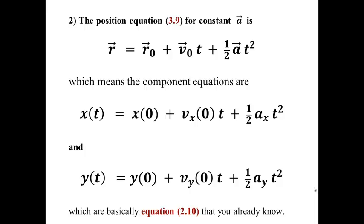Position is initial position plus initial velocity times time plus 1 half the acceleration times time squared. As a vector equation, that's actually two equations, one for the x motion, one for the y motion.